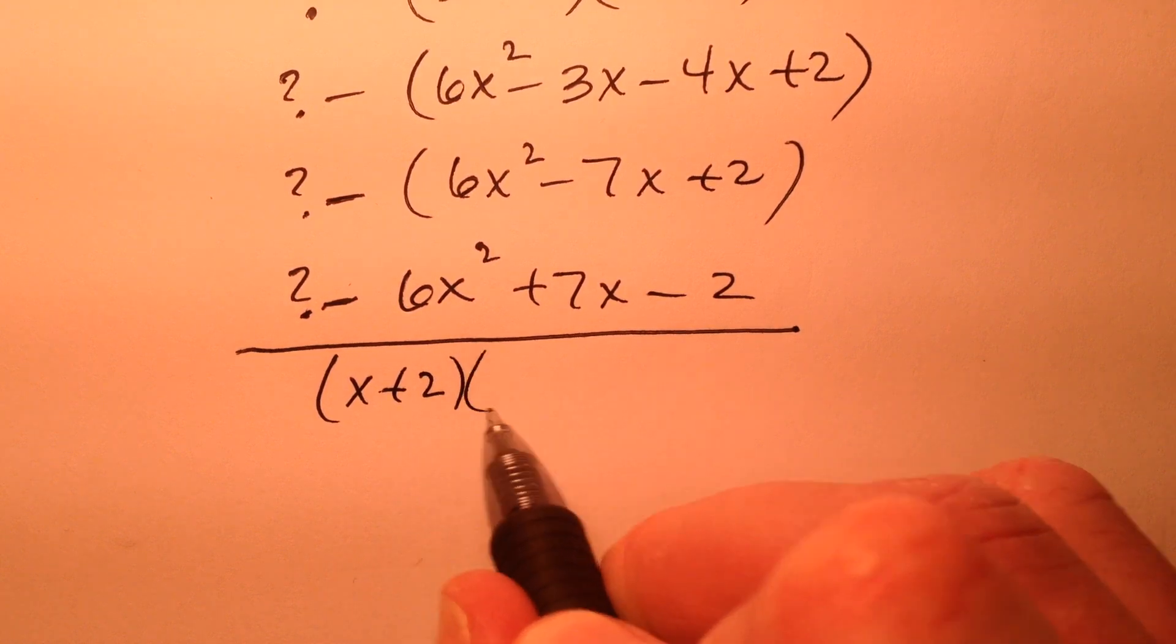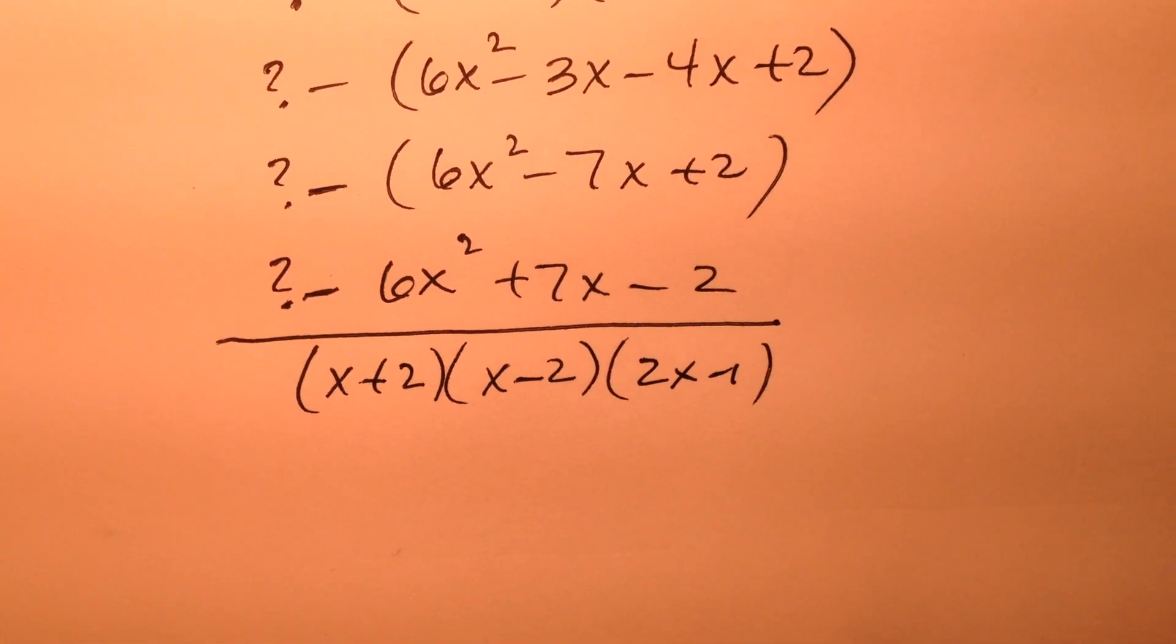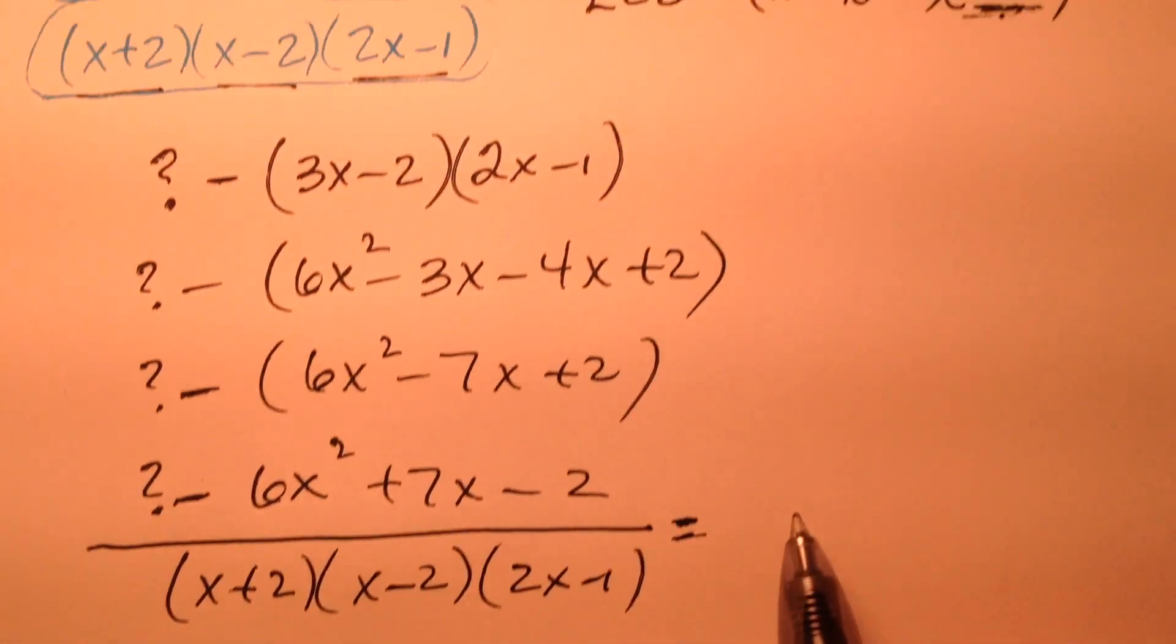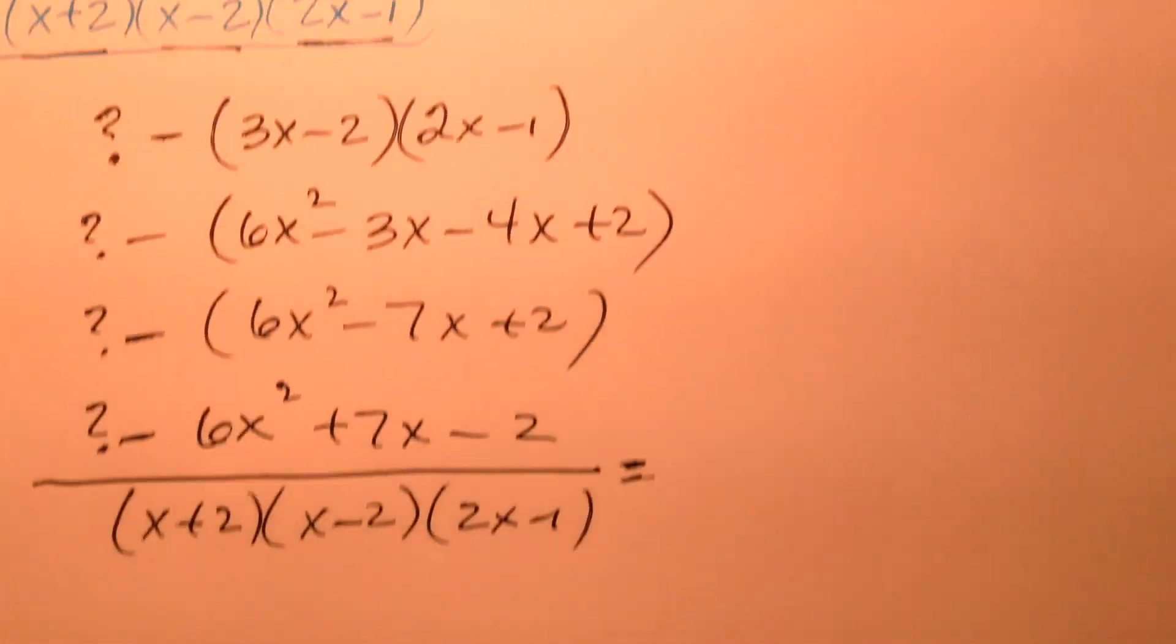So let's go ahead and write that all now with that common denominator. So x plus 2, x minus 2, 2x minus 1. And what does this equal? Well, we know from up here the difference was 3 over x minus 2.